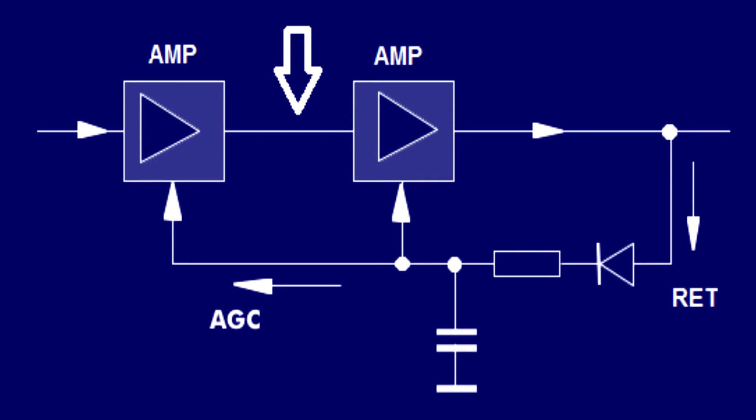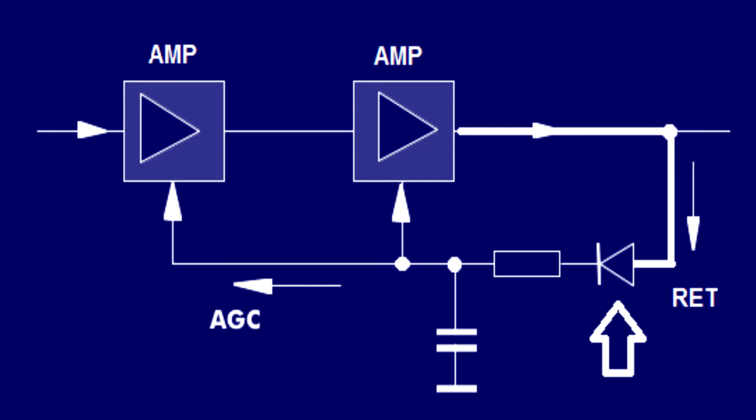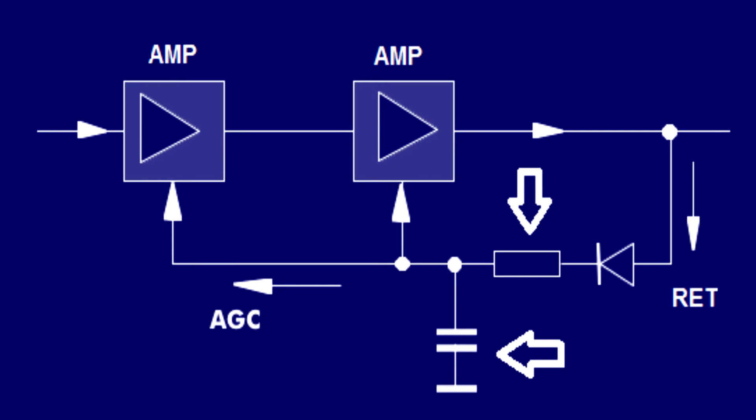The second stage amplifies the signal and there's an output. If we did not have AGC in this circuit, this would be all we'd have — just two amplifiers. But when we have AGC, we take the output from the last stage of amplification, as shown in this drawing, and feed it to a diode. The diode then turns this AC signal coming from the amplifier into a DC signal. Then we have a resistor for attenuation to get us to the right voltage level, and then we go to a capacitor to ground to filter the AC component and come out with a fluctuating DC based on the overall signal level from the last stage of amplification.